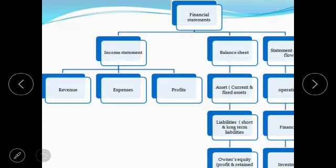This is the flowchart that shows that the income statement has three components: revenue, expenses, and profit. The same goes for the balance sheet also — assets, liabilities, and owner's equity.